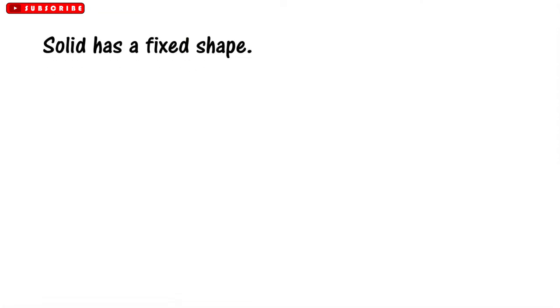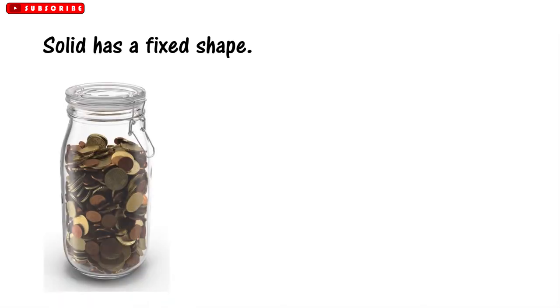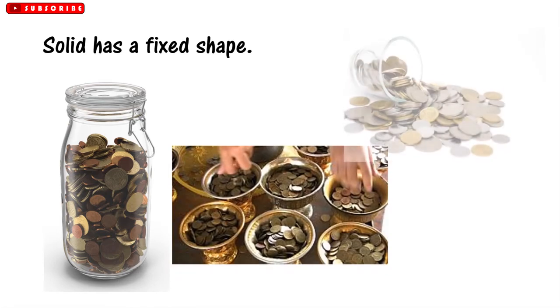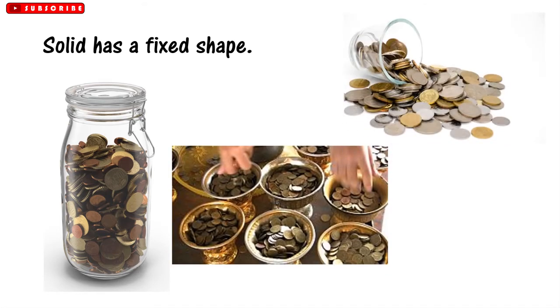A solid has a fixed shape. If a solid is placed in two containers of different shapes, the solid does not take the shapes of the containers. Coins are solid matter. Their shapes remain unchanged in different containers.